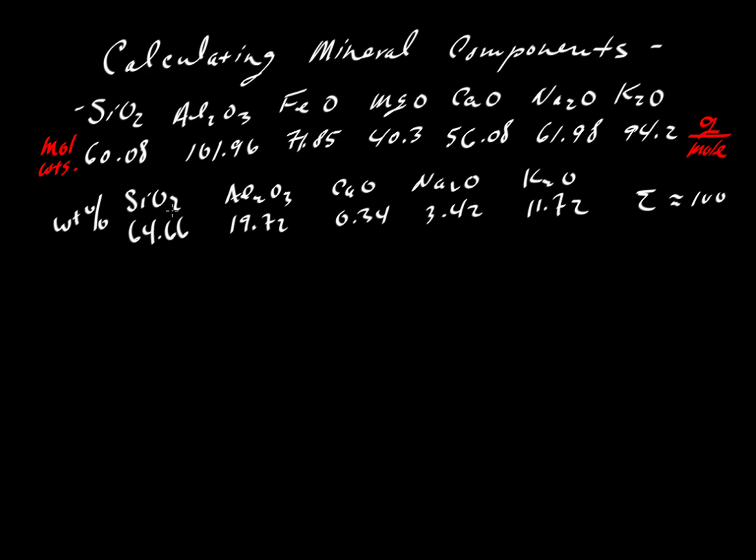How are we going to get the mineral components? The mineral components we're interested in are things like anorthite, albite, and orthoclase. We're going to do the same thing that we did with olivine in another video. The first step is to divide by the molecular weights.